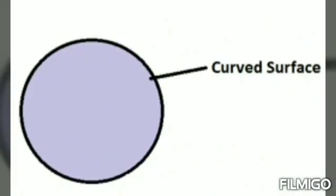Then, we see about sphere shape. In a sphere shape, it has one curved surface. It has no edges and no corners.